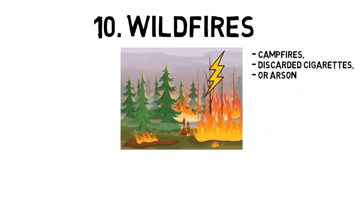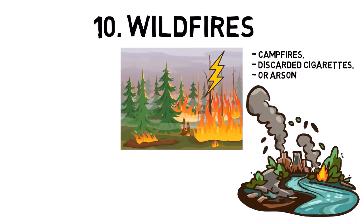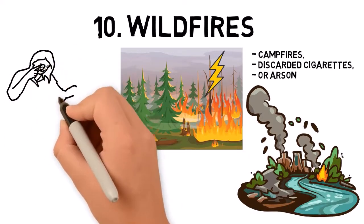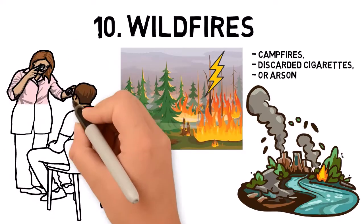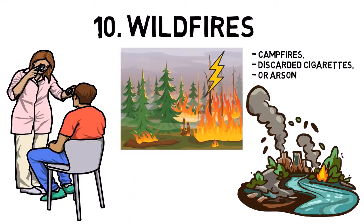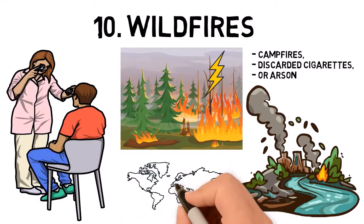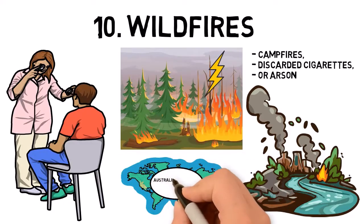Wildfires can cause widespread destruction of property, loss of life, and significant environmental damage. The smoke and ash from wildfires can also have severe health effects on people living downwind of the fire. Wildfires are more common in regions with hot, dry climates such as Australia, California, and parts of the Mediterranean.